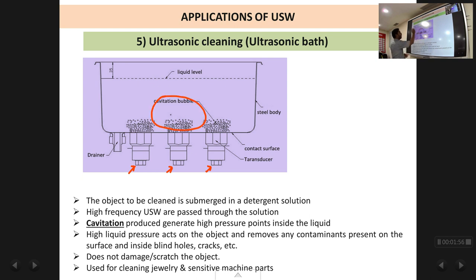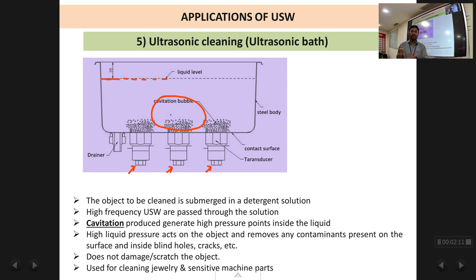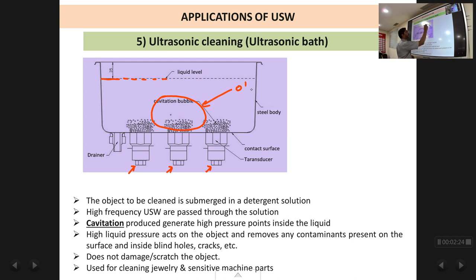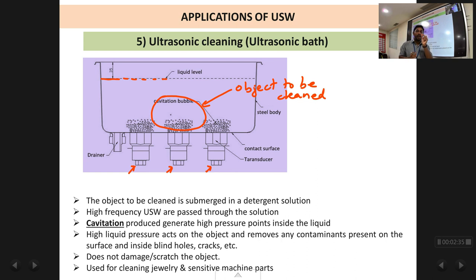The object is submerged in the liquid. The liquid normally used is a detergent solution — a little bit of soap is added so that the cleaning effect is better. So the object is kept submerged in the detergent solution. When ultrasonic waves are passed, cavitation occurs and because of the air bubbles bursting inside the liquid, high pressure points are created.